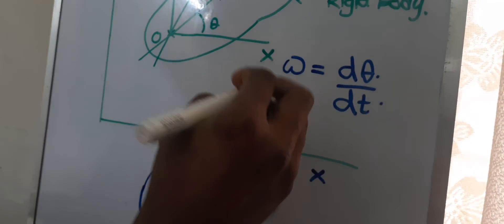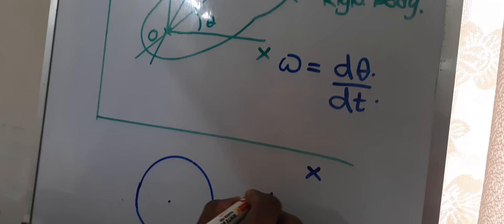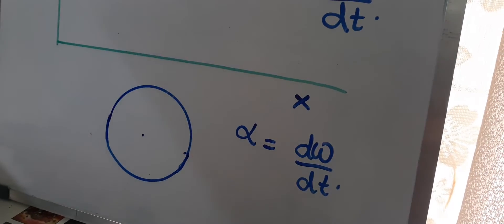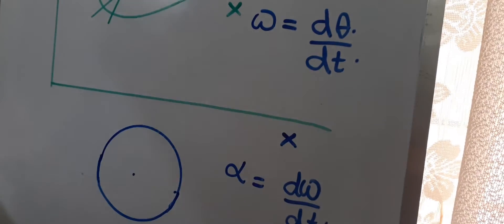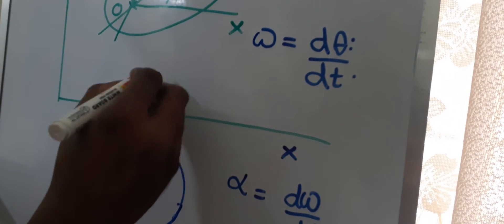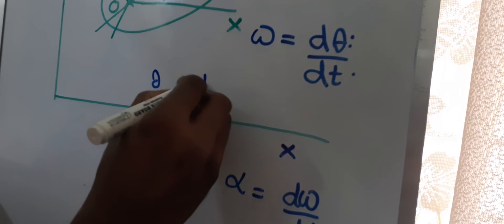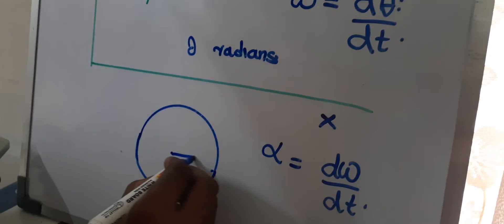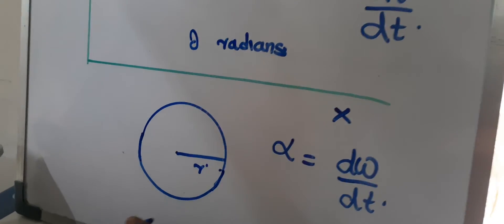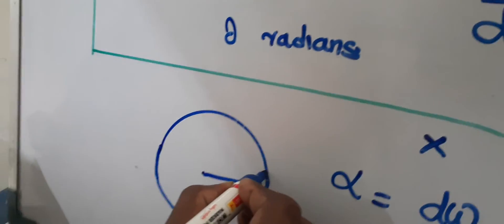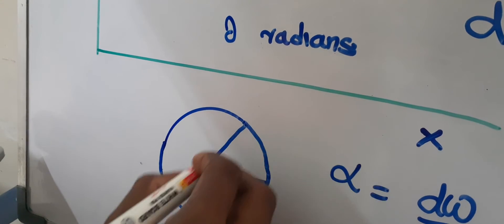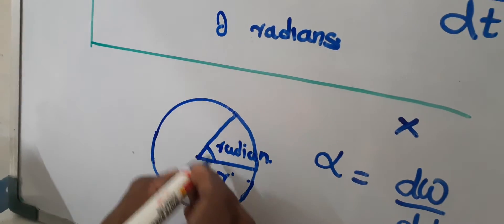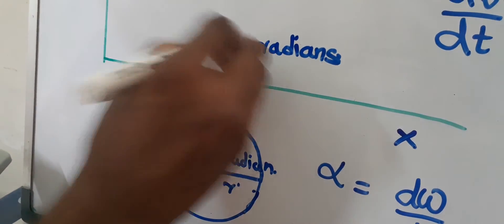The rotational counterpart of acceleration is alpha, and alpha is defined as the rate of change of angular velocity. The angle theta is normally expressed in radians, not in degrees. Radians means: if you take a circle of radius r and lay the radial distance r along the arc, the angle covered for that arc length is one radian.